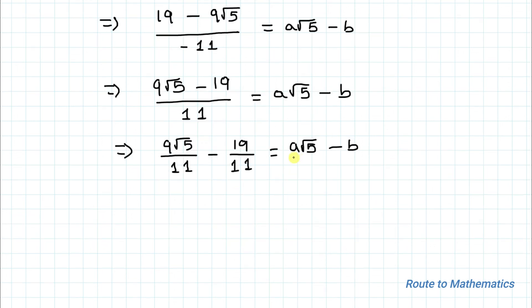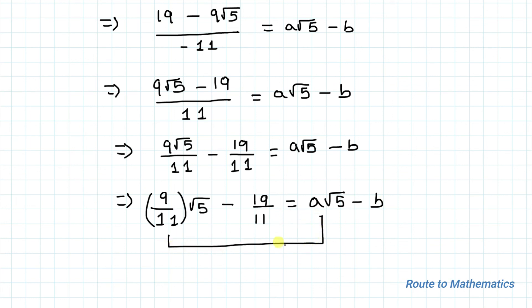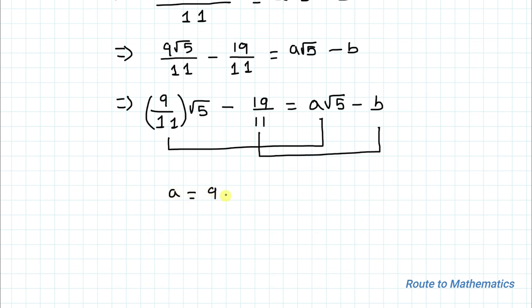So we can separate this as (9 root 5)/11 minus 19/11 equals a root 5 minus b. Comparing the coefficient of root 5 on both sides, the left hand side has 9/11 as the coefficient of root 5. So we can write: (9/11) times root 5 minus 19/11 equals a root 5 minus b. Therefore, a equals 9/11 and b equals 19/11 is our answer.